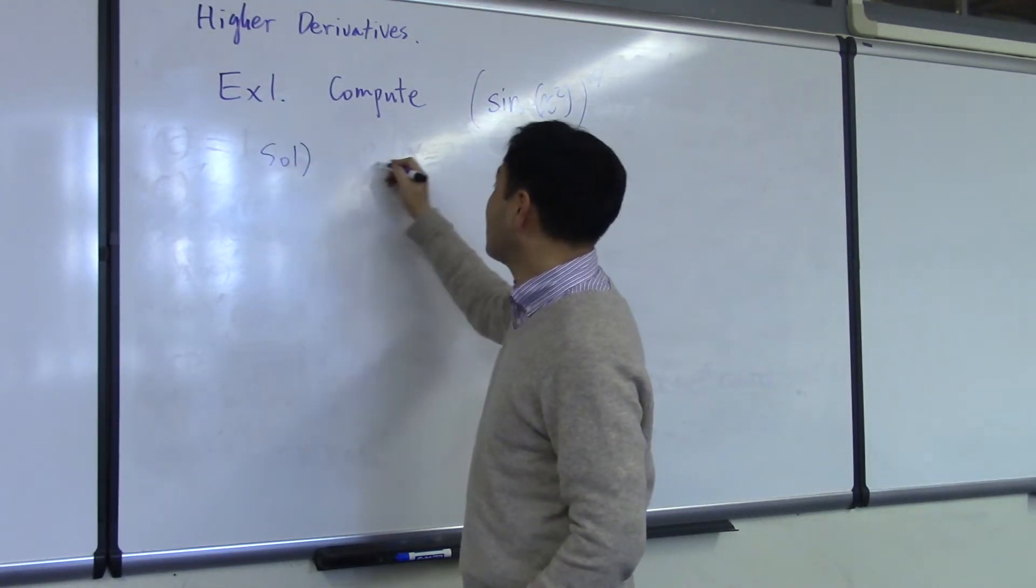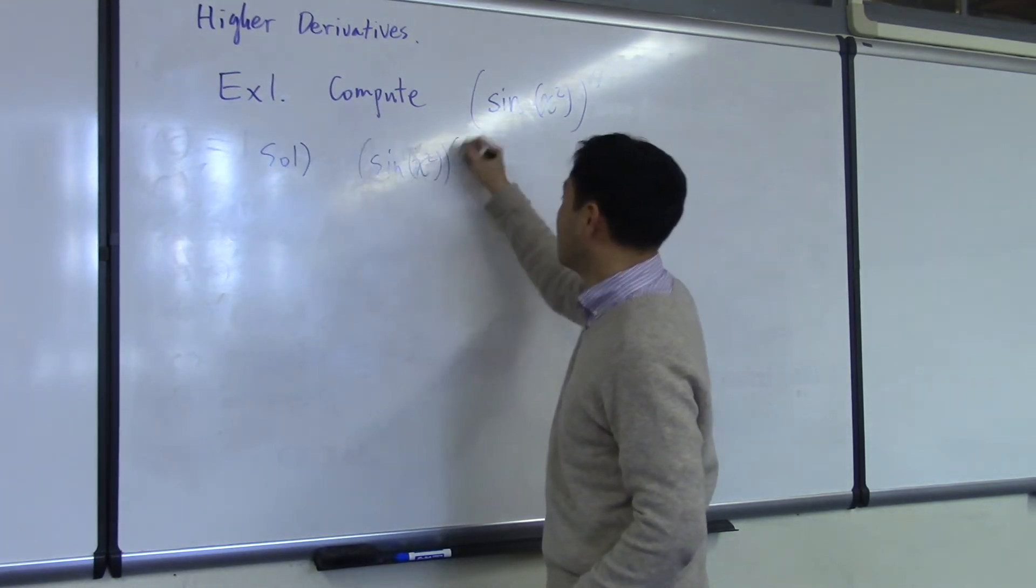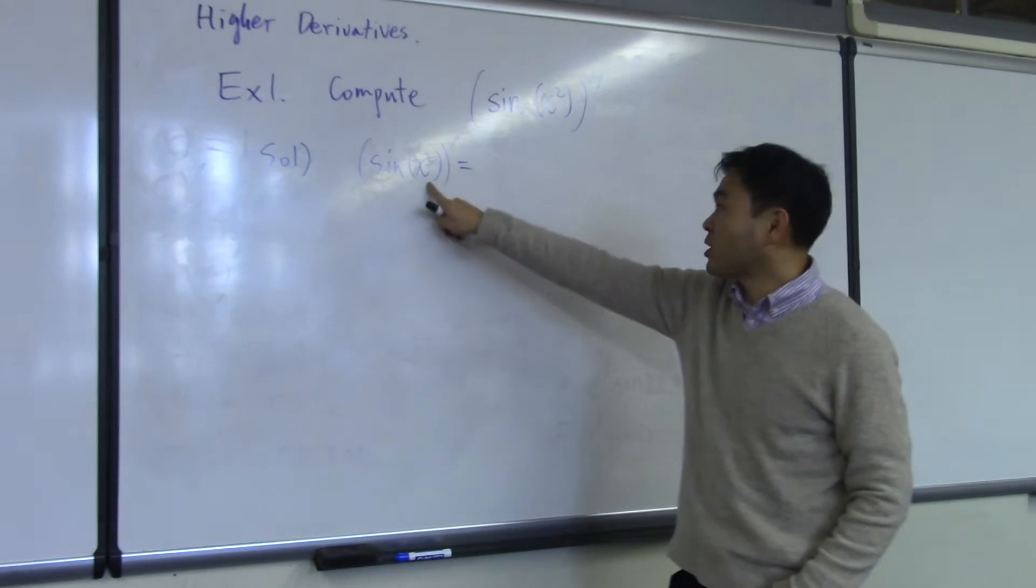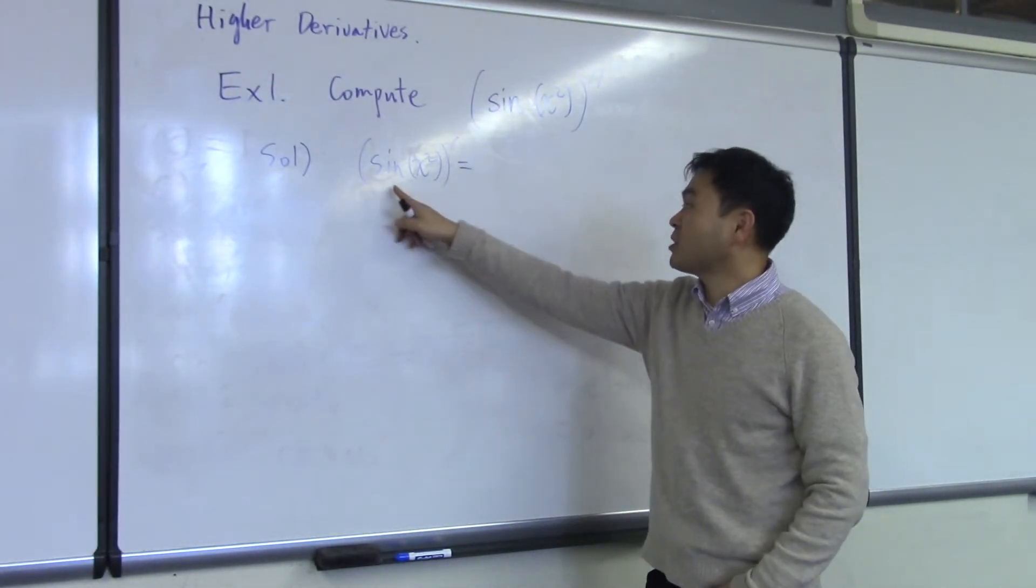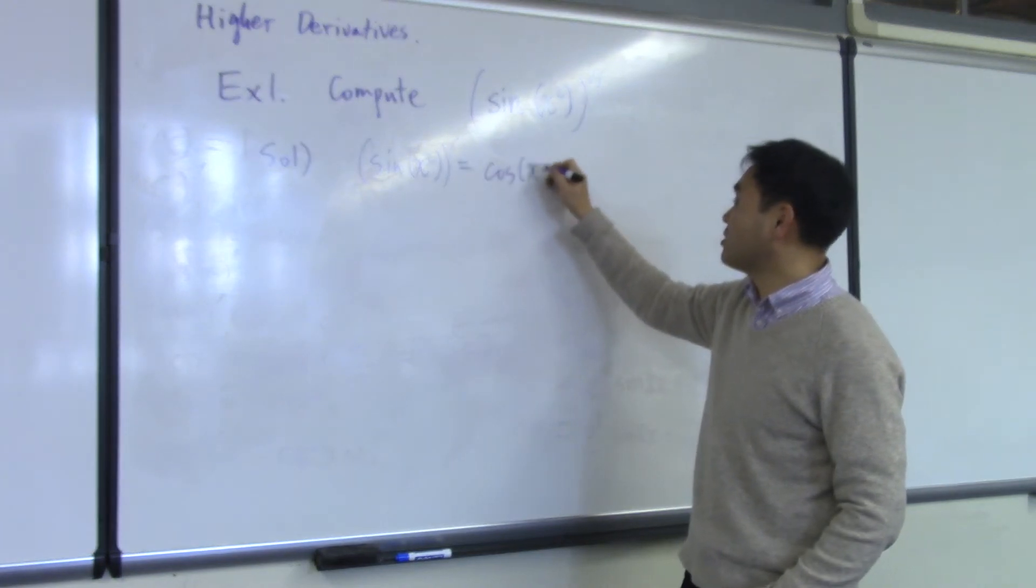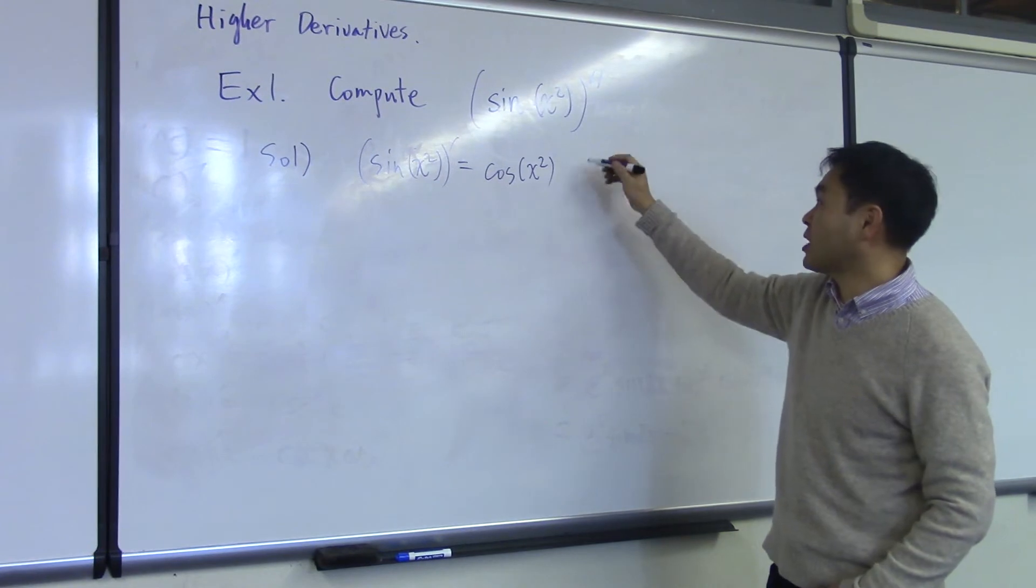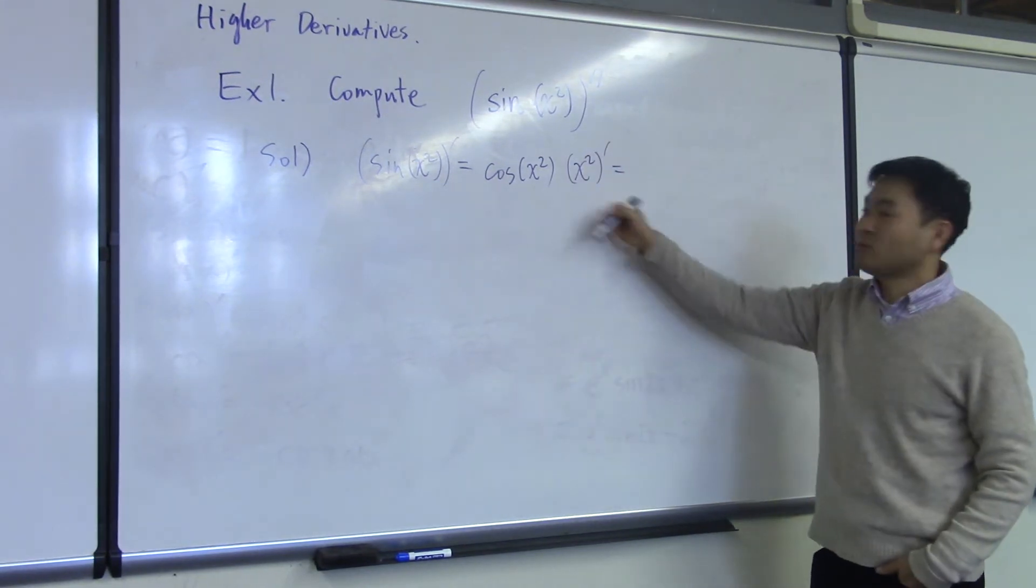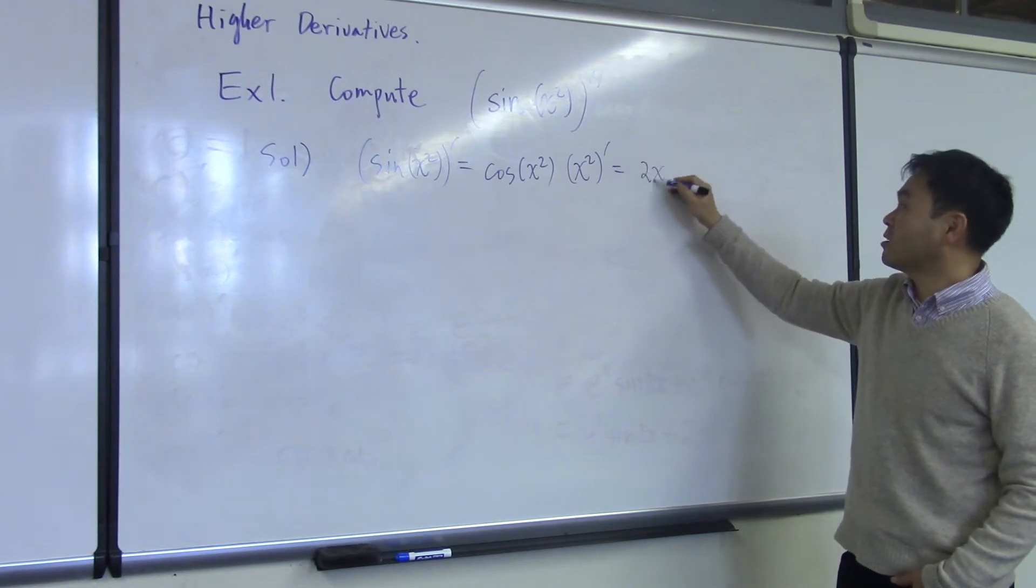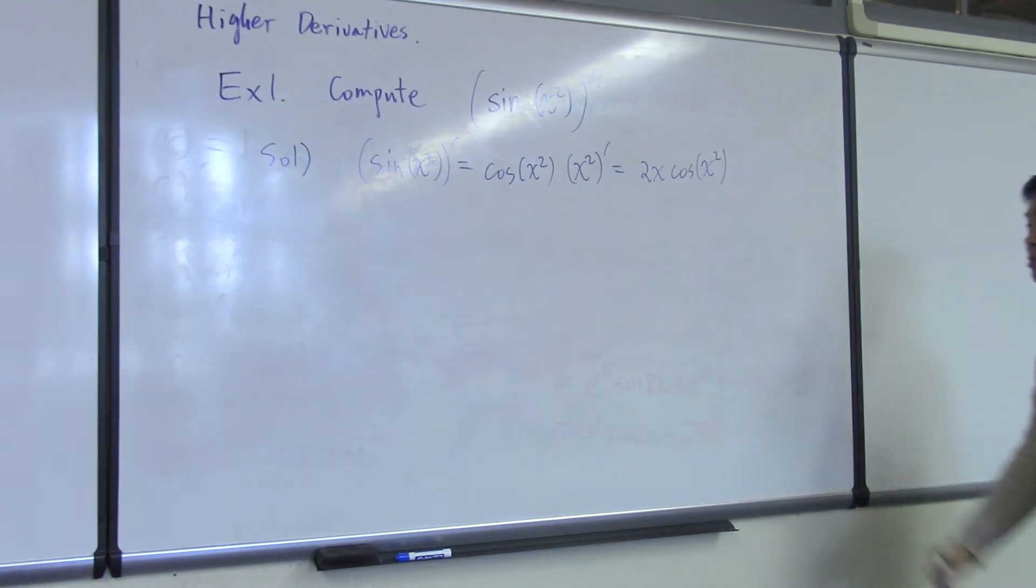Solution. You start off by finding the first derivative. Now because x squared is nested inside, we have to use the chain rule, which says differentiate the outside function, leave the inside unchanged, but pull the inside function outside and differentiate, which gives you 2x. Therefore, the first derivative is 2x times cosine x squared.